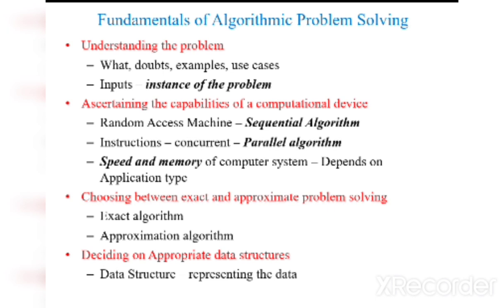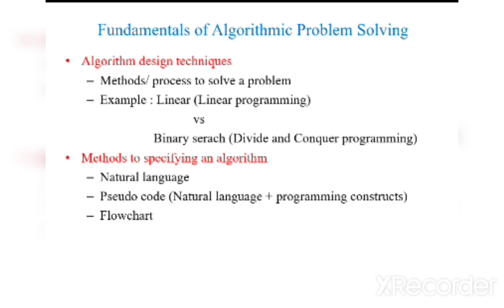The fourth step is deciding on appropriate data structures. We have to choose the appropriate data structure based on the problem. Next, algorithm design techniques. We have to choose the methods or process to solve a problem, for example linear programming or binary search. We'll be having several design techniques. What do you mean by linear programming? We'll be processing it in one direction. For binary search, we'll be dividing the problem into sub-problems and processing.